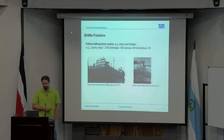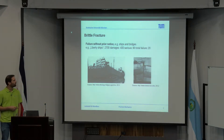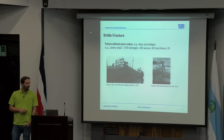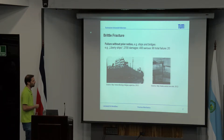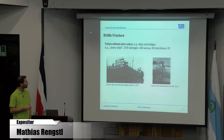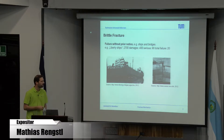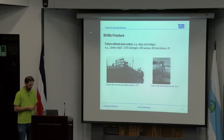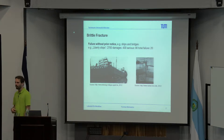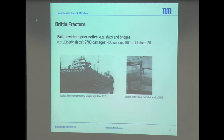As yesterday, I already used the word brittle fracture. Brittle fracture is always something which has a smooth surface. In the past, there have been some accidents. For example, the accidents of the Liberty ships — there were 270,000 damages, 500 serious cases, and 90 total failures. The ships just broke in the middle.